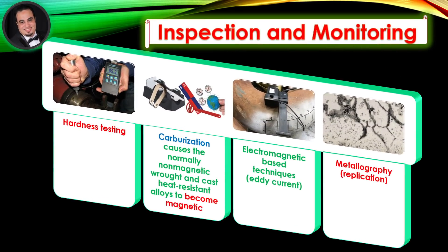Inspection and monitoring: Hardness testing is a key method. Carburization causes the normally non-magnetic wrought and cast heat-resistant alloys to become magnetic, enabling electromagnetic-based techniques such as eddy current. Metallography replication can also be used.